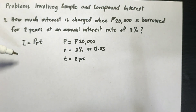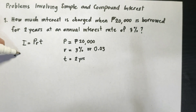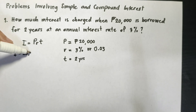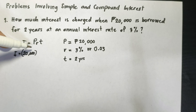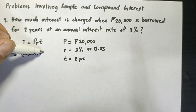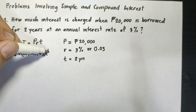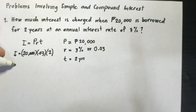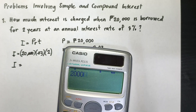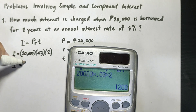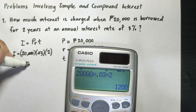Using the formula: I equals 20,000 pesos times 0.03 times 2 years. We get 1,200 pesos. So the interest is 1,200 pesos.